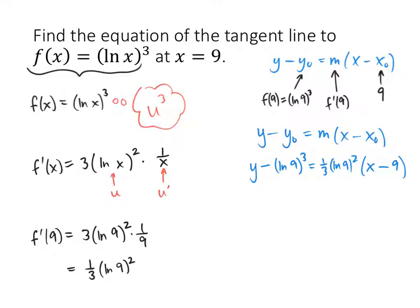This problem asks me to write my answer in y equals mx plus b format, so I've got a little bit of simplification to do. Let's work on the right-hand side. We've got one-third natural log of 9 squared x minus, when I multiply one-third by 9, I get 3. So that's 3 times the natural log of 9 squared. And then I'm going to add natural log of 9 cubed to both sides. So I get one-third natural log of 9 squared x minus 3 natural log of 9 squared plus natural log of 9 cubed.